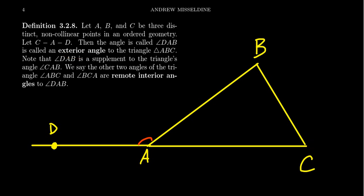We have this exterior angle D, A, B, which is exterior relative to the angle A that's part of the triangle. Every triangle has three interior angles. Since this exterior angle is connected to one of the interior angles of the triangle, the other two interior angles are what we refer to as the remote interior angles. The angle ABC and the angle BCA are both remote interior angles. The exterior angle theorem makes a connection between exterior angle DAB and remote interior angles ABC and BCA.